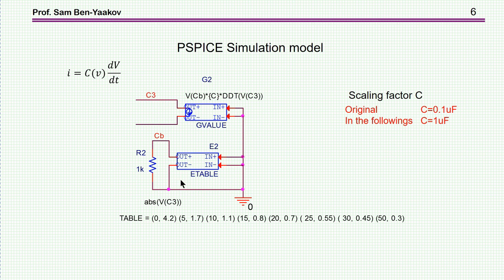Let's go, first of all, to the first question of how to build a SPICE, in this case implemented in PSpice, simulation model of a voltage-dependent capacitor. The state-space equation of a capacitor is written here: current is capacitance times dv/dt, that is the derivative of the voltage.